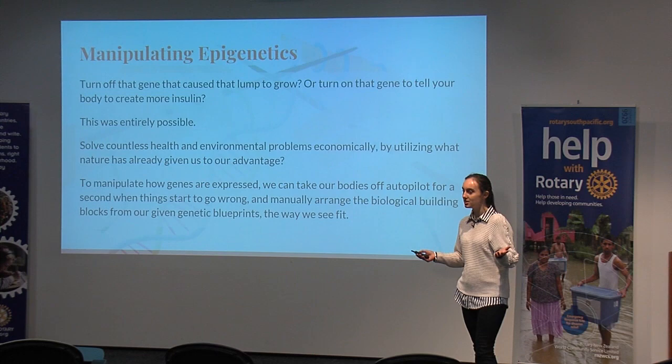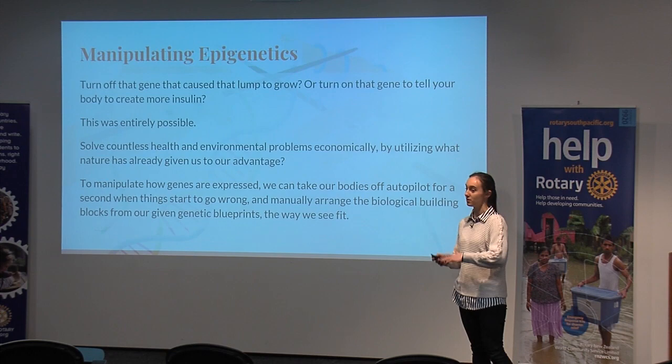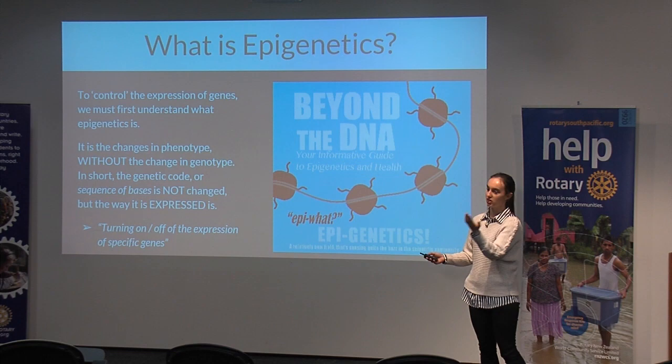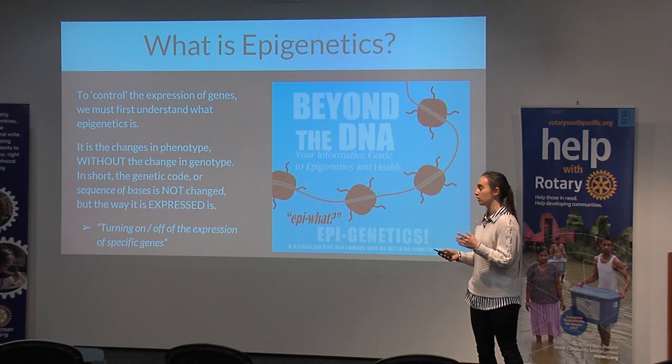To manipulate the way how genes are expressed, we can take our bodies off autopilot for a second when things start to go wrong. So to control the expression of genes, we must first understand what epigenetics is. It is the changes in the phenotype without the change in the genotype. In short, your genetic code or sequence of bases is not changed, but the way that it is expressed is.